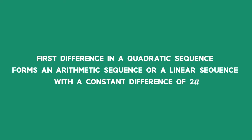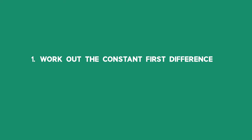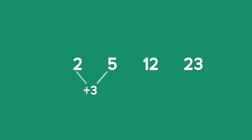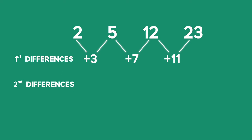Let's now use that to work out the general term for the sequence 2, 5, 12, and 23. We first work out the first differences: to get from 2 to 5 we add 3, from 5 to 12 we add 7, and from 12 to 23 we add 11. This is the row of first differences. Now we check for a constant second difference: from 3 to 7 we add 4, and from 7 to 11 we add 4. So our constant second difference has a value of 4.